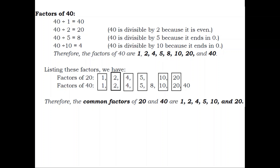Therefore, the factors of 20 are 1, 2, 4, 5, 10, and 20. Factors of 40: 40 ÷ 1 = 40; 40 ÷ 2 = 20 — 40 is divisible by 2 because it is even; 40 ÷ 5 = 8 — 40 is divisible by 5 because it ends in 0; 40 ÷ 10 = 4 — 40 is divisible by 10 because it ends in 0. Therefore, the factors of 40 are 1, 2, 4, 5, 8, 10, 20, and 40. The common factors of 20 and 40 are 1, 2, 4, 5, 10, and 20.